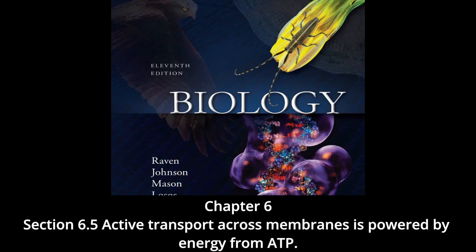Section 6.5: active transport across membranes is powered by energy from ATP. While diffusion, facilitated diffusion, and osmosis are passive transport processes moving materials down their concentration gradients, cells can also move substances up their concentration gradients. This requires energy expenditure — typically ATP — and is therefore called active transport. Like facilitated diffusion, active transport involves highly selective protein carriers that bind to transported substances such as ions, sugars, amino acids, or nucleotides.